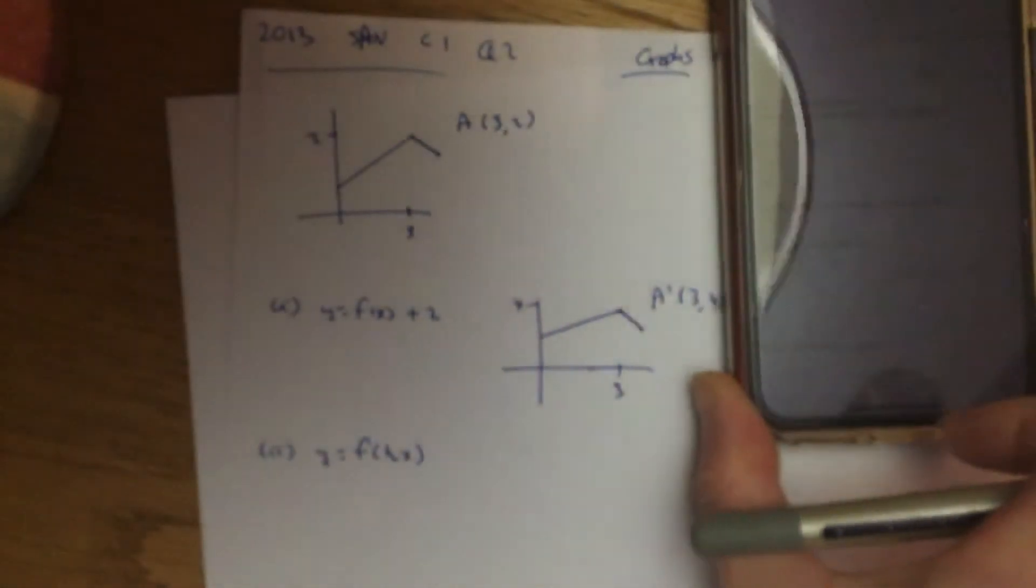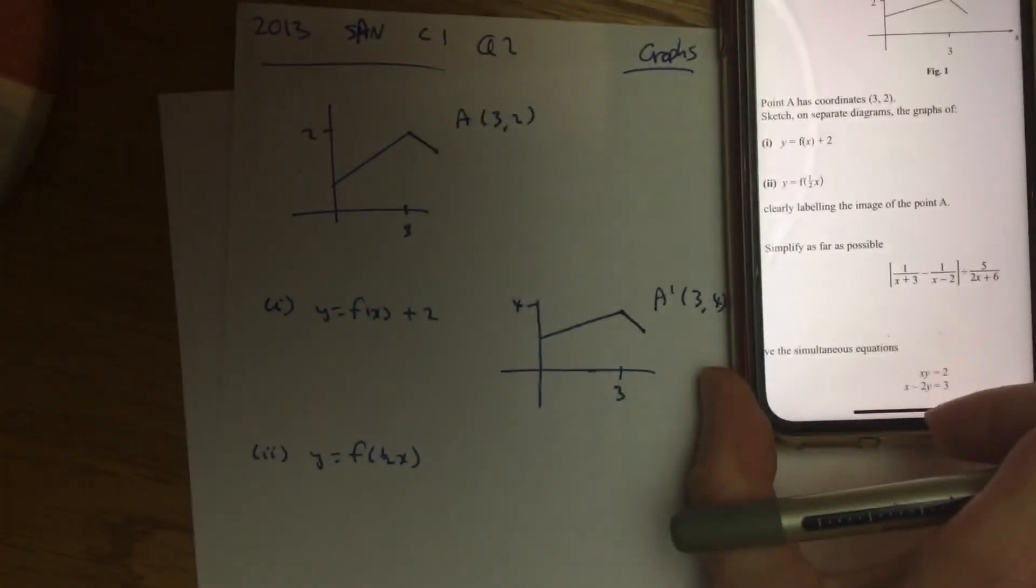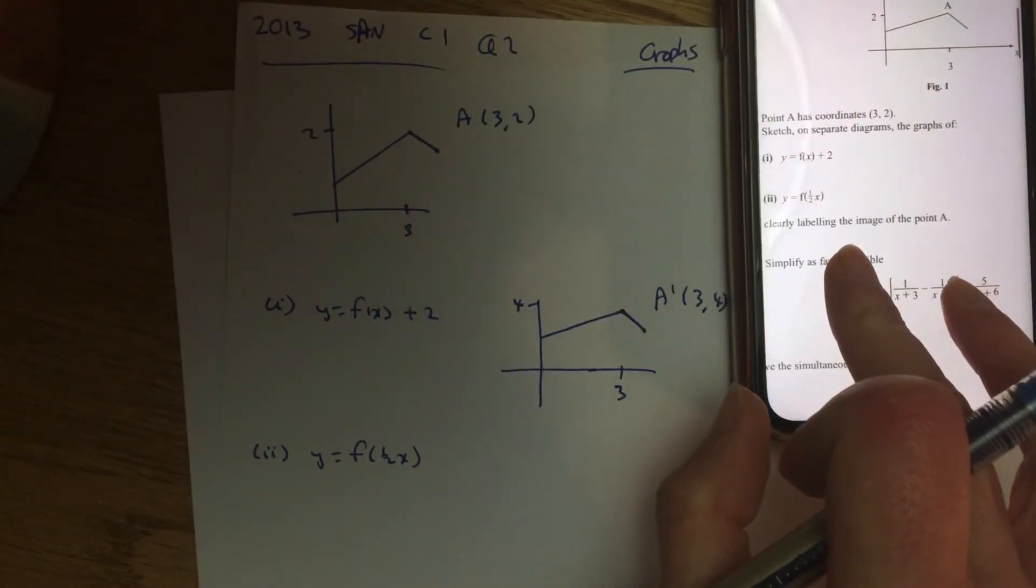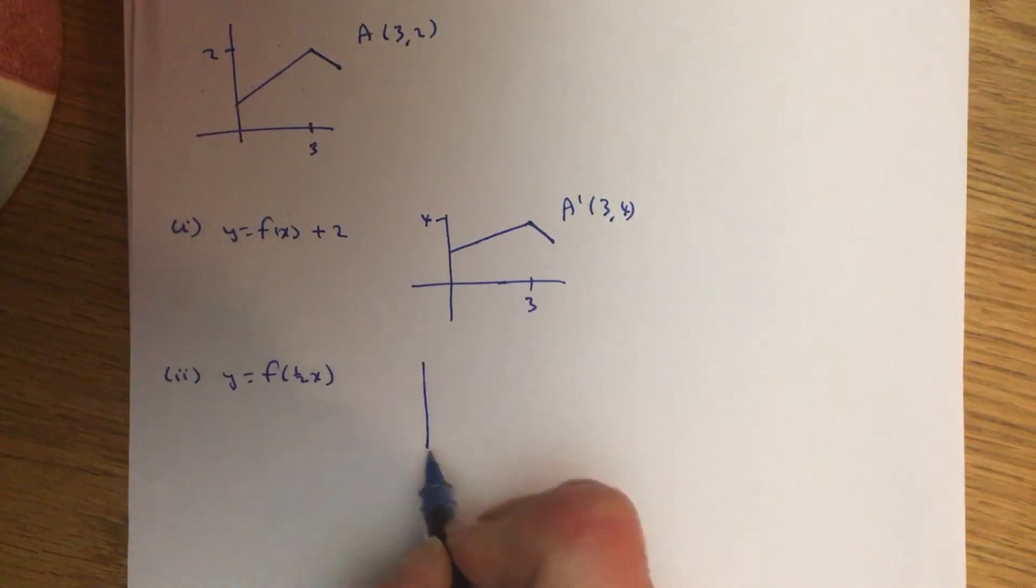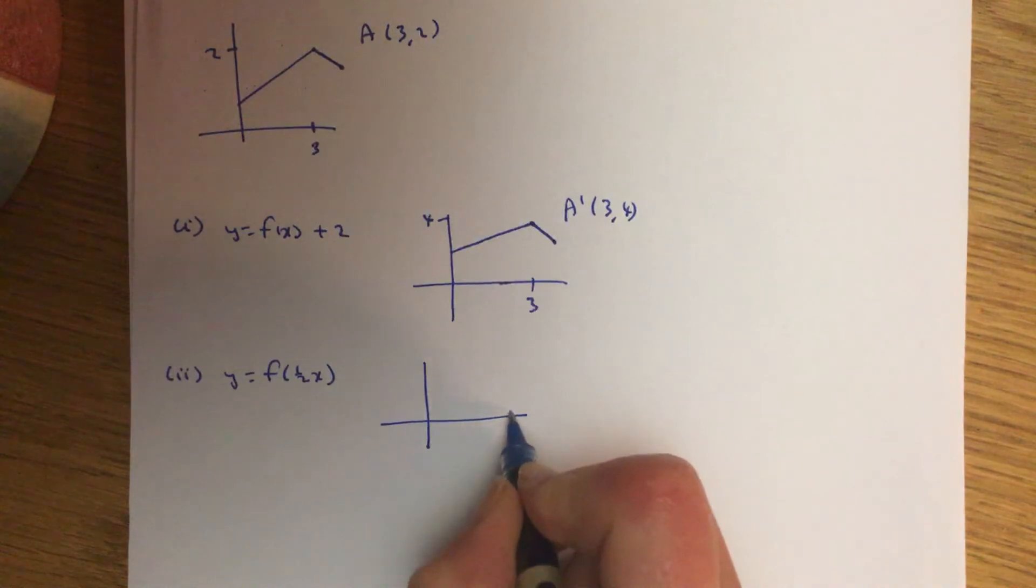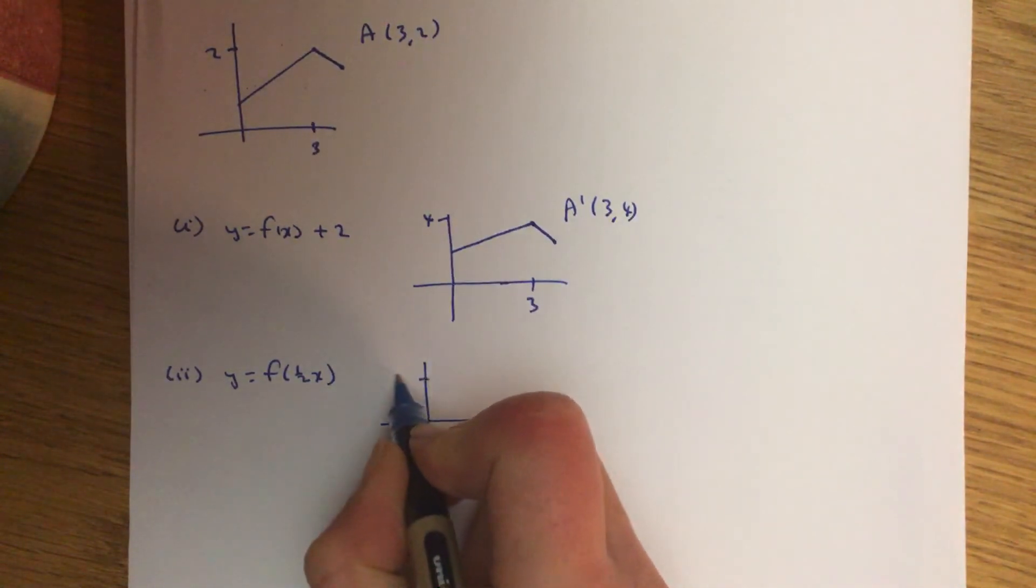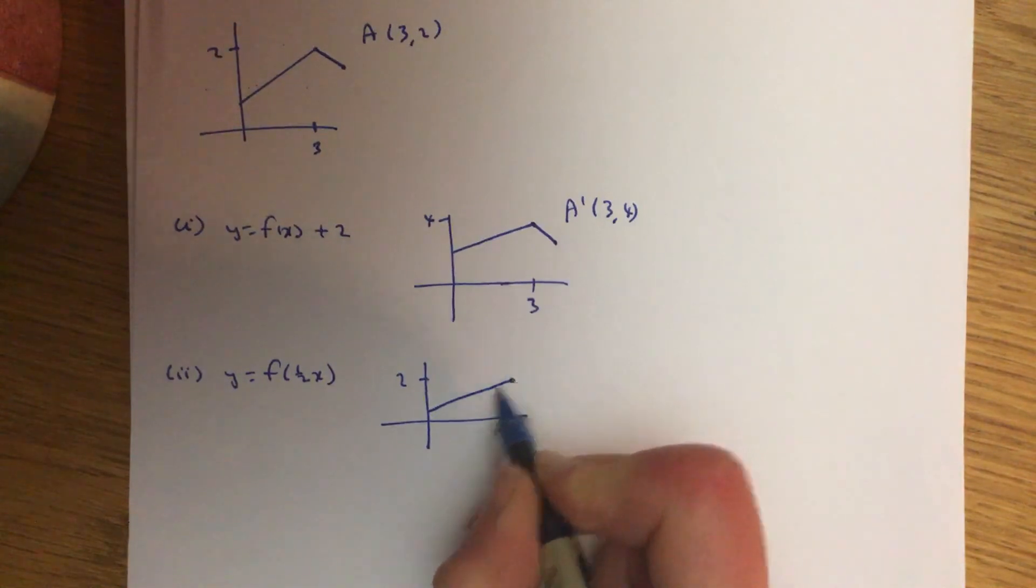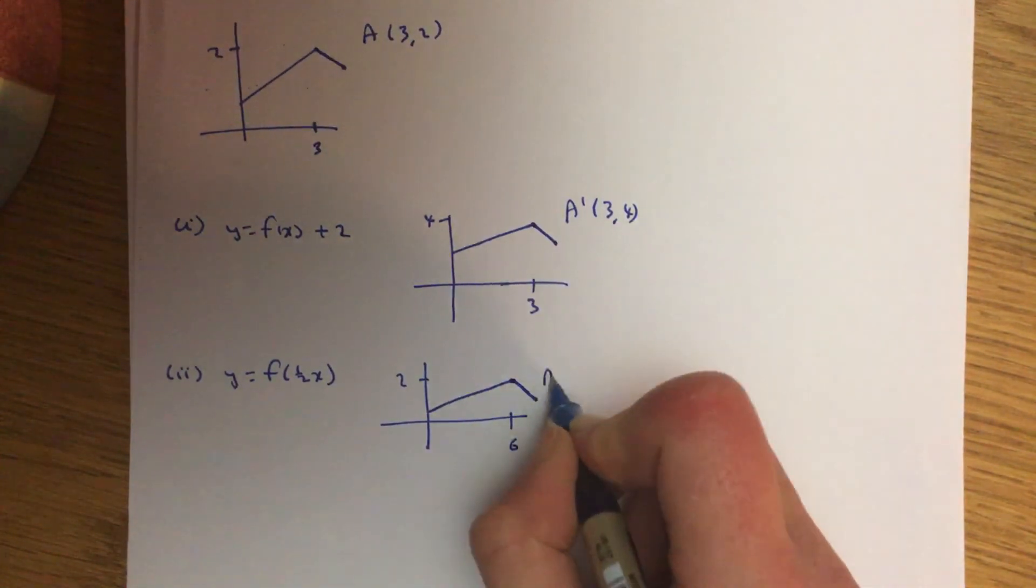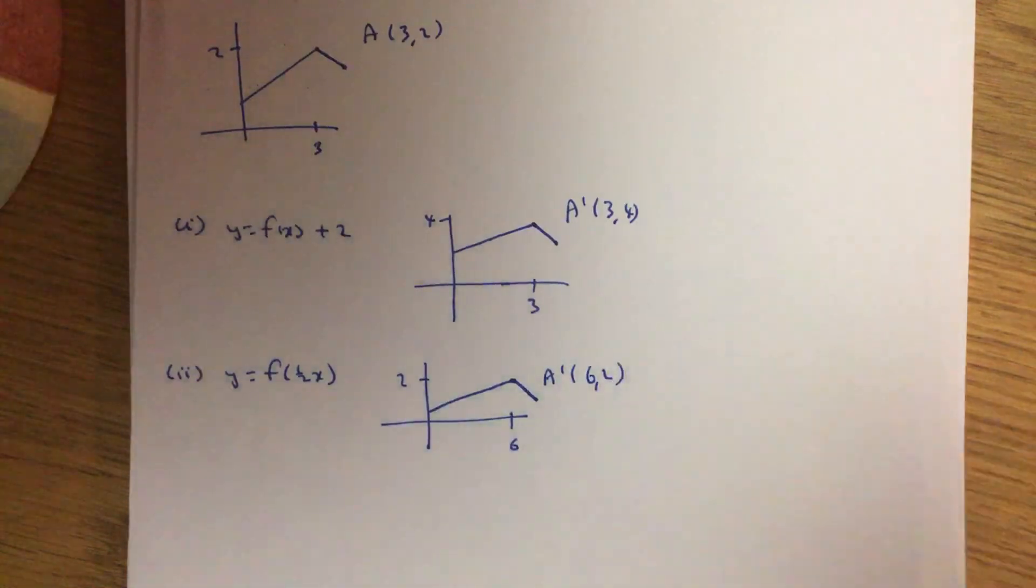The next bit of that is asking you to draw y equals f of half x. So inside the brackets you do the opposite to the axis, you're going to double the axis, so it's going to be 6. This point, top point's not going to change, so that line is not as steep as this. So A dash is (6, 2).